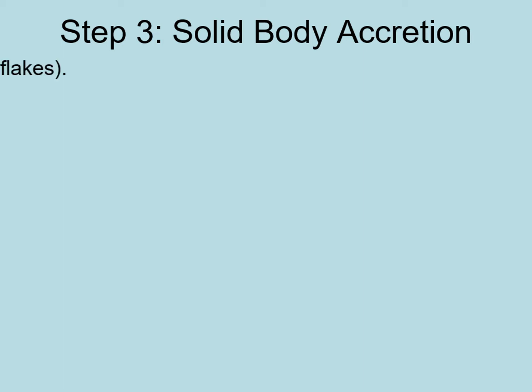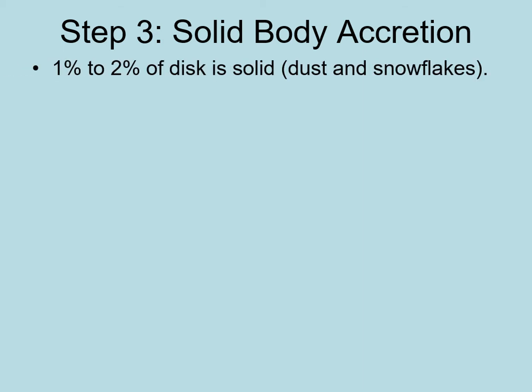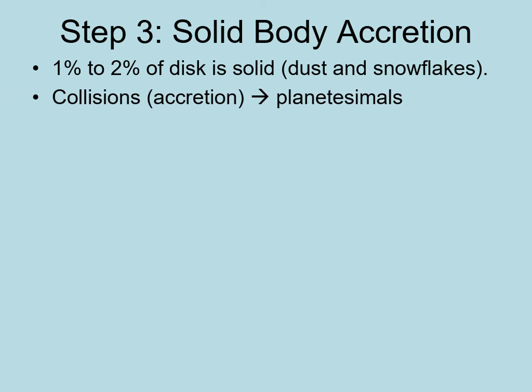The next step in making planets focuses just on the solid material that condenses out of the disk. Solids condense out as tiny dust grains and snowflakes. However, they can quickly grow through collisions. Turbulence in the gas can help with this by concentrating dust grains in small areas where they can clump together more quickly. We call this buildup through collisions solid body accretion.